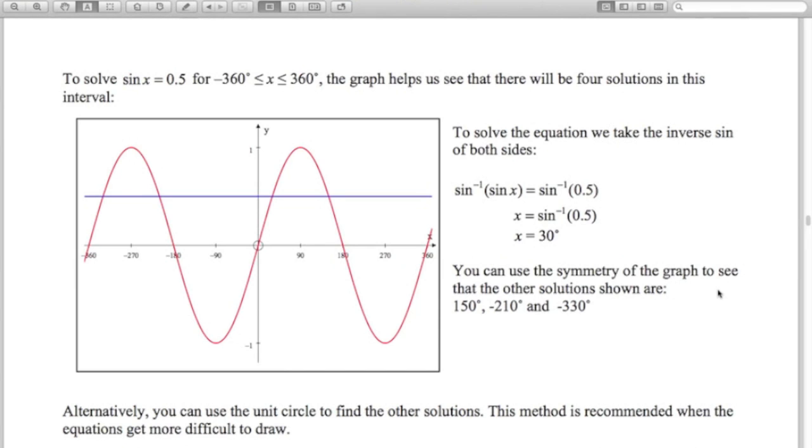Sine of x equals 0.5. We go shift sine 0.5 on our calculator. This is in effect doing the inverse sine of both sides. Your calculator should spit out 30 degrees if it's in degrees mode. So this first solution here is 30 degrees. I can see from the symmetry that this other solution must be 30 less than 180, which is 150. This solution must be 30 less than negative 180, so negative 210. And this other solution is 30 more than negative 360, so negative 330. I can use the graph and the symmetry to get the other solutions.